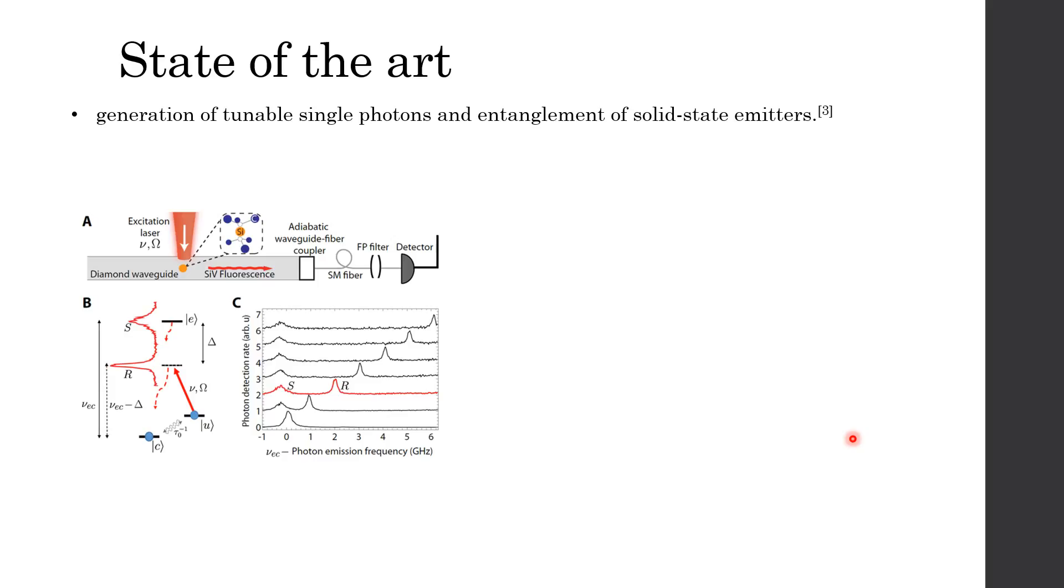In this 2016 paper, they used Raman transition between the metastable orbital states of SiV centers. When a single SiV center is excited from the state U by driving laser with a detuning of delta, the emission spectrum includes the spontaneous component at frequency mu EC and the Raman component at frequency mu EC minus delta. This shows the Raman emission frequency and bandwidth can be manipulated by choosing the frequency and intensity of the driving lasers.